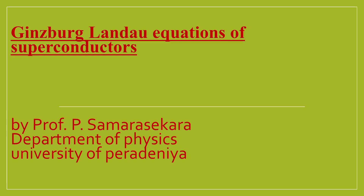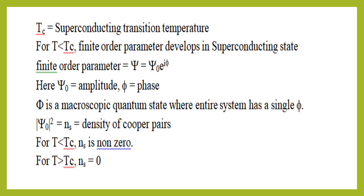Here we will prove the Ginzburg-Landau equations for superconductors. TC is defined as the superconducting transition temperature. Below TC the material is in the superconducting state, and above TC the material is in the normal state.